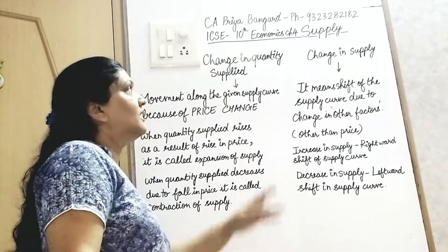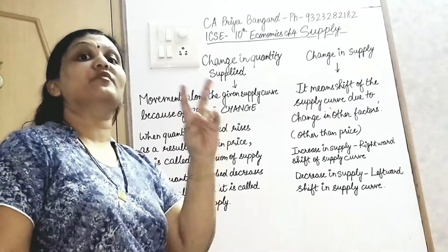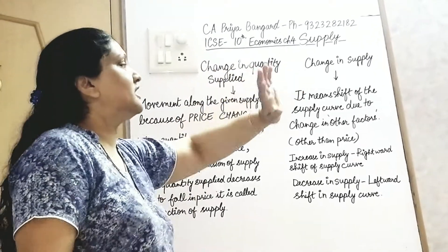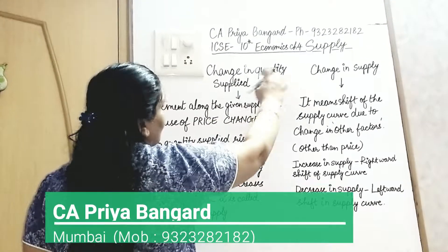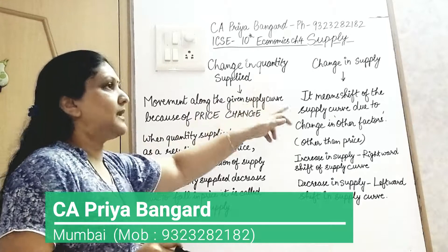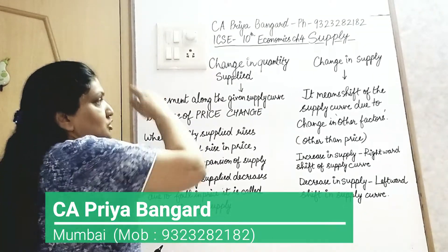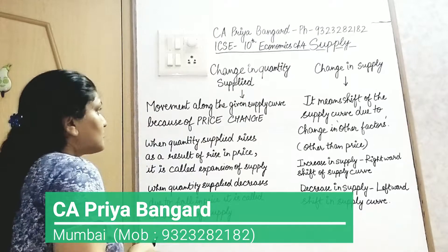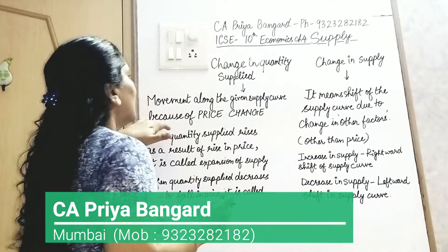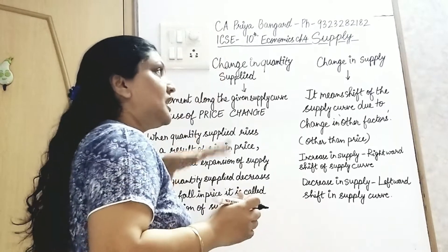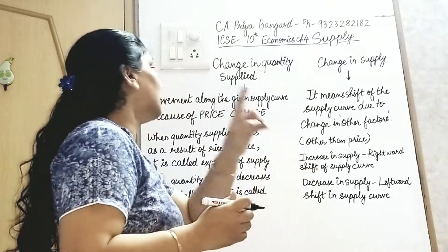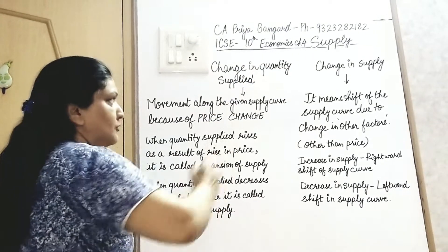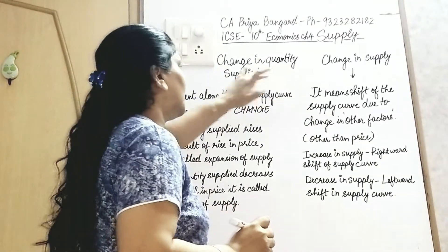Change in quantity supplied and change in supply are two very different things. Change in quantity supplied means movement along the given supply curve. There is only one reason for movement along the supply curve — change in price. Due to price change, there is upward or downward movement on the supply curve, which is called change in quantity supplied.